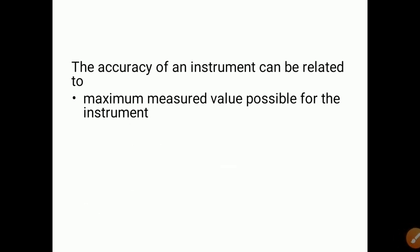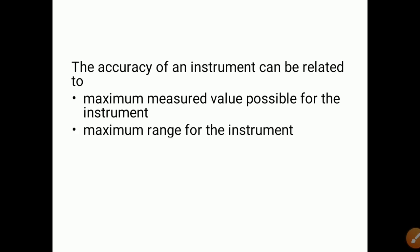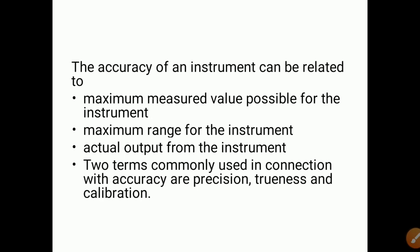The accuracy of an instrument can be related to the maximum measured value possible for the instrument, the maximum range of the instrument, and the actual output from the instrument. Two terms commonly used in connection with accuracy are precision, trueness, and calibration — all important factors related to accuracy. We will study these definitions now.